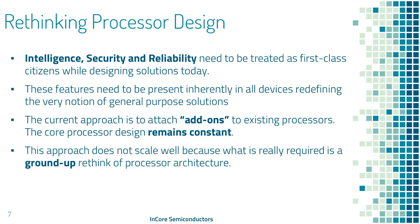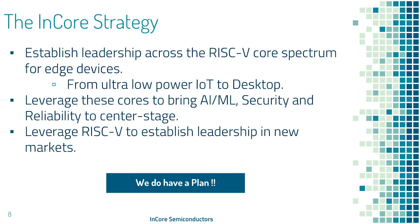So we are rethinking processor design. We don't want to just do a basic five-stage pipeline, optimize for DMIPS, and call it the best processor. What we say is: when we build processors, intelligence, security, and reliability will be the first-class citizens we design with. Every architecture optimization will go toward meeting one of these goals. These new features need to be present inherently in all devices, redefining the very notion of general purpose — not just DMIPS or CoreMarks, but general purpose for AI/ML and for security.